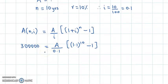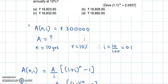So 3 lakhs into 0.1 that gives us 30,000. 30,000 is equal to A into, the value given is 2.5937